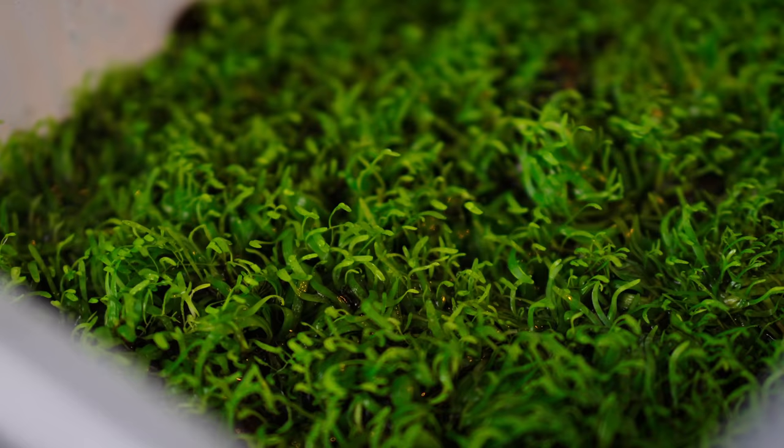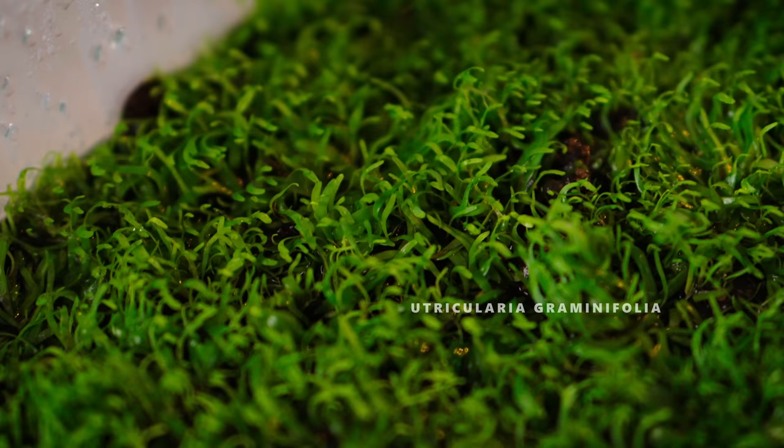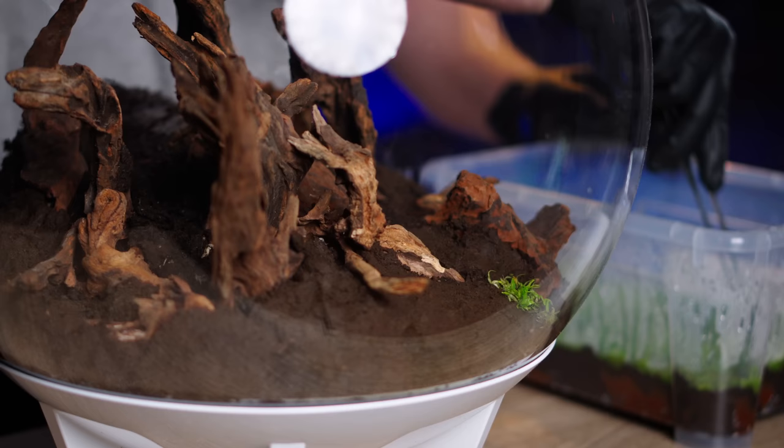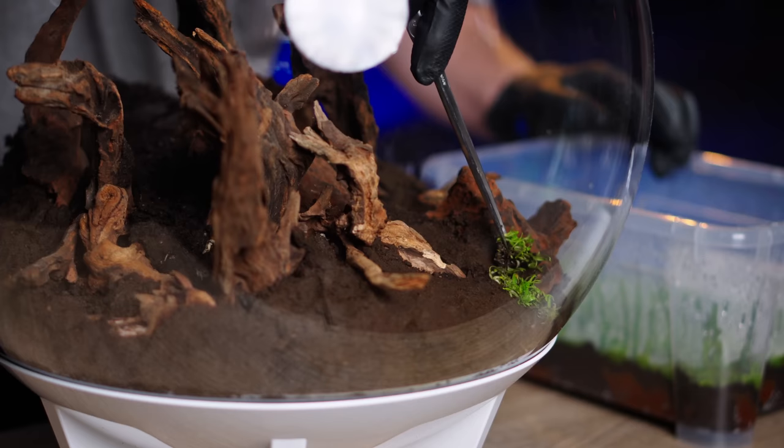The first plant we introduce will be familiar to many in the aquascaping hobby, it is called Utricularia graminifolia. The Utricularia belongs to the bladderwort species and it's surprisingly a carnivorous plant.